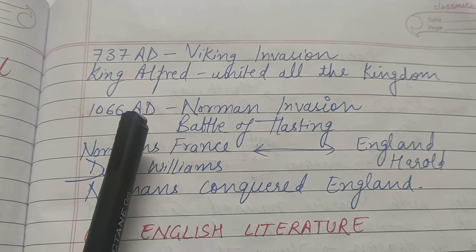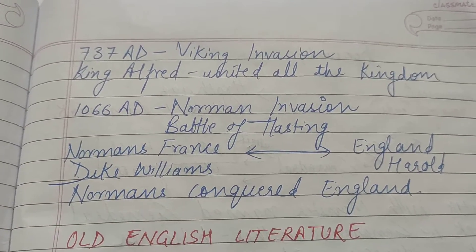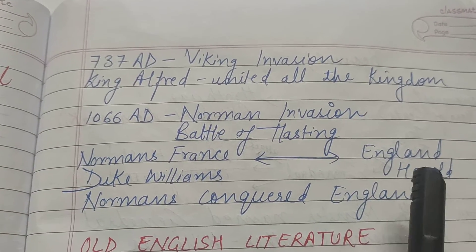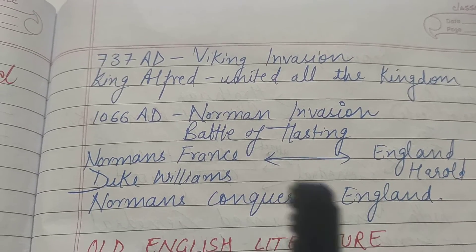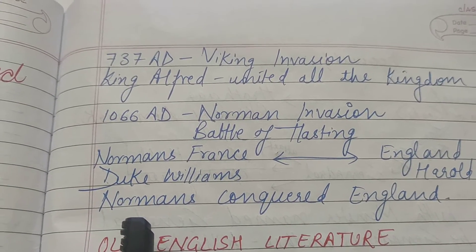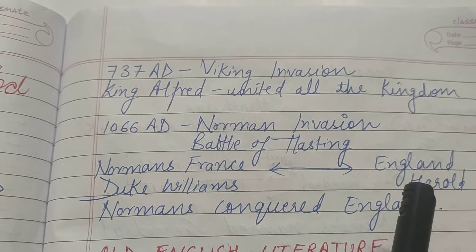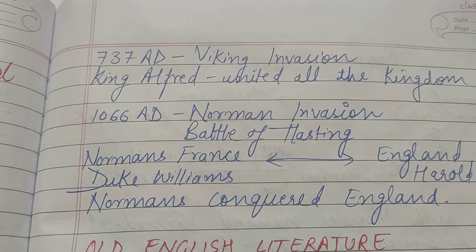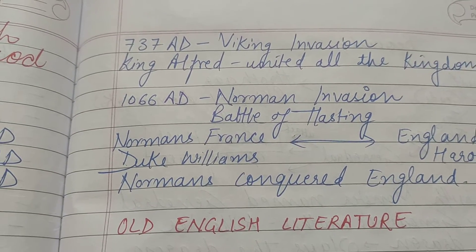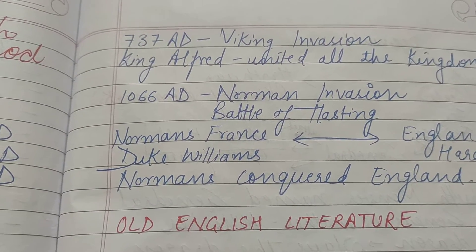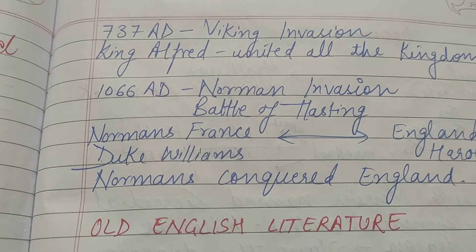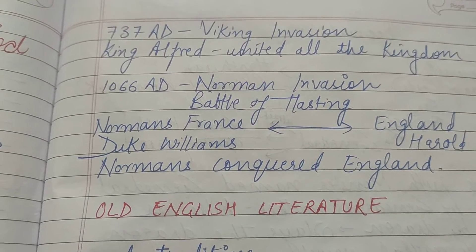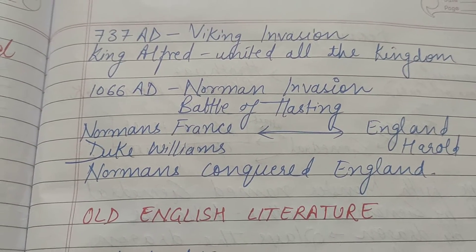1066 AD mein Norman invasion hua, ya fir Battle of Hastings hua. France aur England ke beech mein battle hui — Duke William from France ne King Harold of England ko hara diya aur Normans ne England ko conquer kar liya. Isi se Anglo-Saxon period khatam ho gaya. Angles aur Saxons ki tribes ko bahar nikala gaya aur raaj hua Normans ka, ya fir France ka.